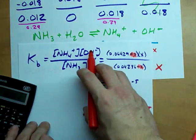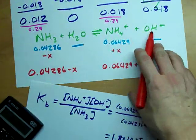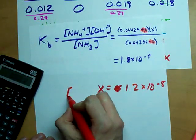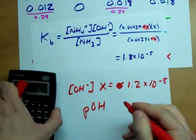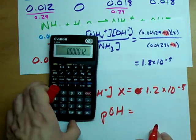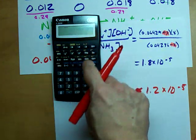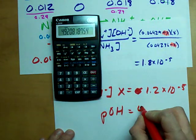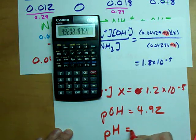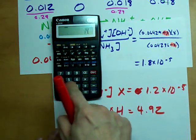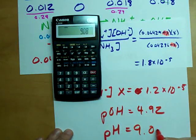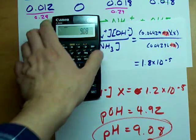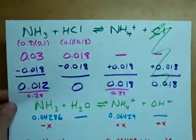That's significant because x is the concentration of OH⁻. To find the pOH, I take the negative log of that number. The negative log gives me 4.92, and the pH is 14 minus that number, which gives me 9.08. That makes sense — it's a basic pH because I had base left over after I used up all my strong acid.